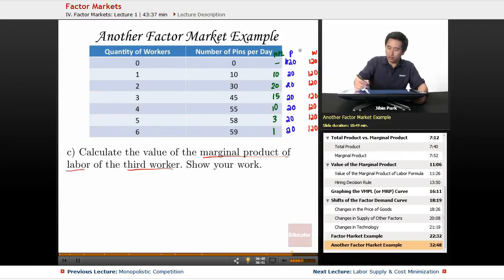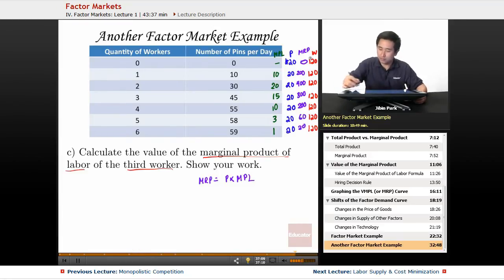The MRP is the price times the MPL. At this point it's zero, then 200, then 400, then 300, back to 200, and then you have a huge drop-off—60, 20, and then 20. In terms of figuring it out, it's pretty easy. You hire the first worker, second worker, third worker, fourth worker—you don't hire the fifth worker.